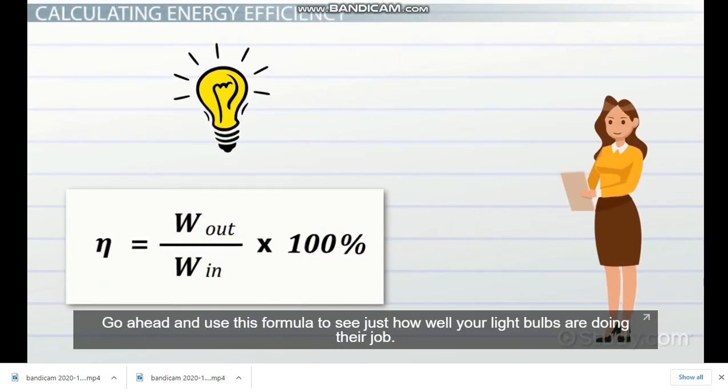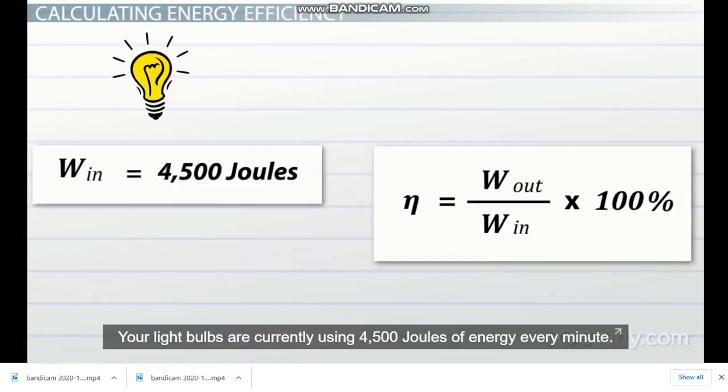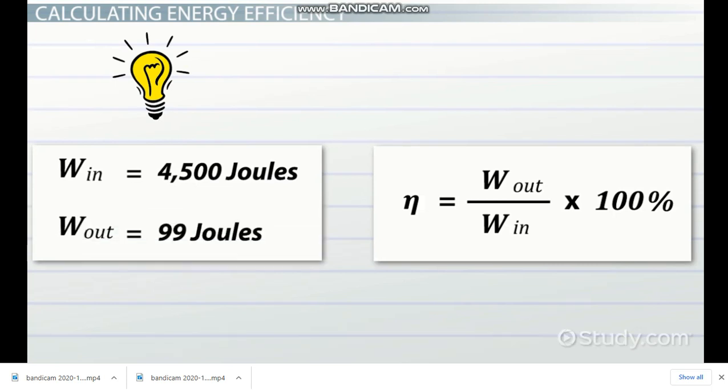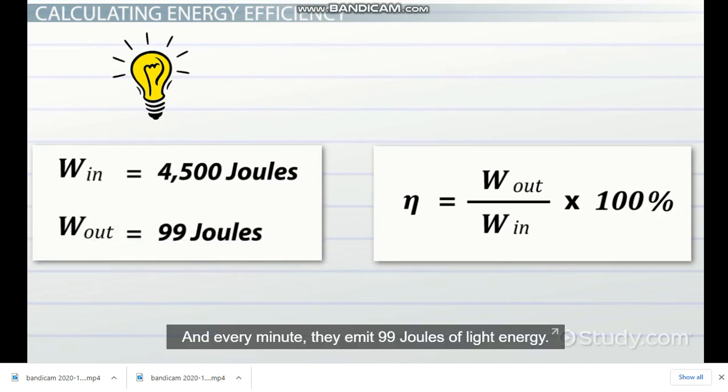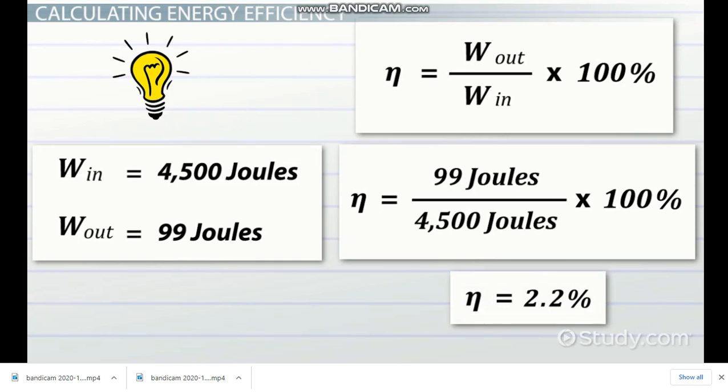Go ahead and use this formula to see just how well your light bulbs are doing their job. Your light bulbs are currently using 4500 joules of energy every minute, and every minute they emit 99 joules of light energy. So we get 99 joules divided by 4500 joules times 100%, which equals 2.2%.